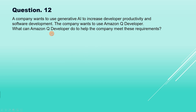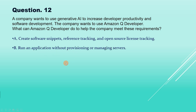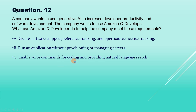Now question number 12. A company wants to use generative AI to increase developer productivity in software development. The company wants to use Amazon Q Developer. What can Amazon Q Developer do to help? The options are: Option A, create software snippets, reference tracking and open source license tracking. Option B, run an application without provisioning or managing servers. Option C, enable voice commands for coding and providing natural language search. Option D, convert audio files to text documents by using ML models.